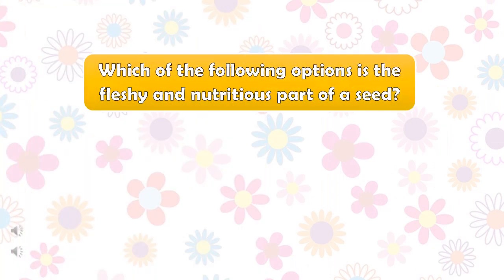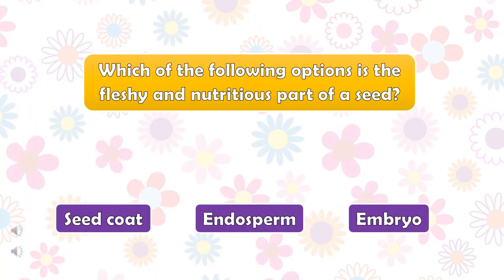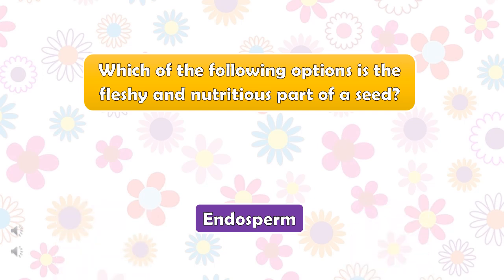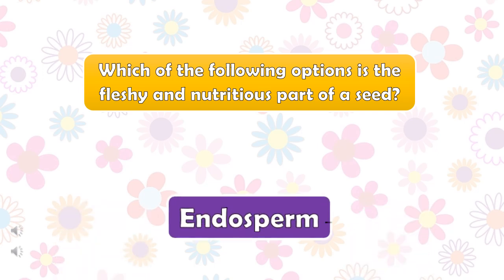Which of the following options is the fleshy and nutritious part of a seed? The right answer is endosperm.